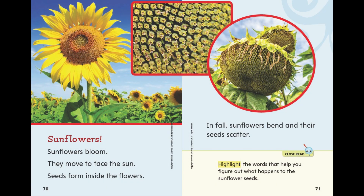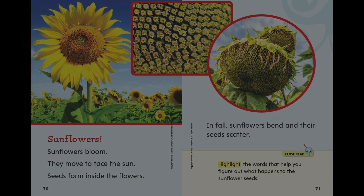Sunflowers. Sunflowers bloom. They move to face the sun. Seeds form inside the flowers. In fall, sunflowers bend and their seeds scatter.